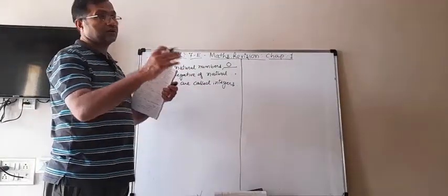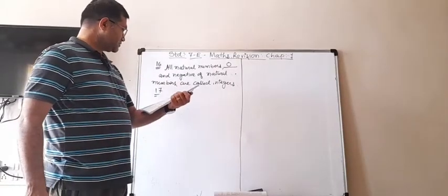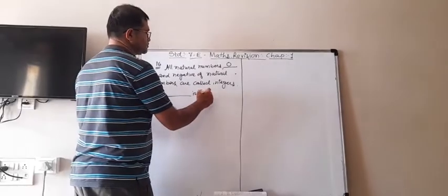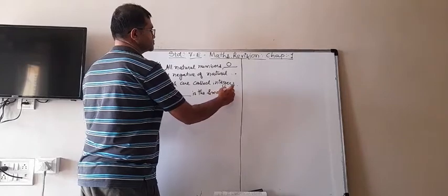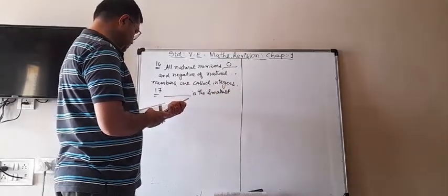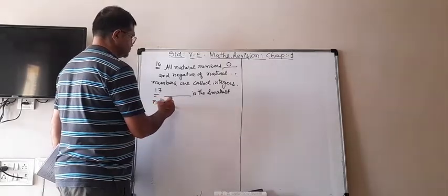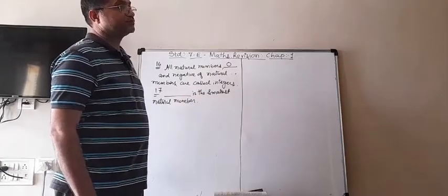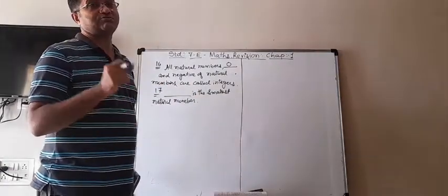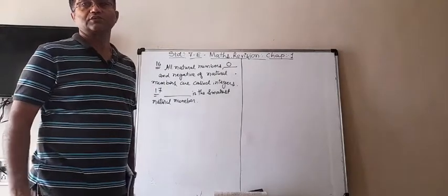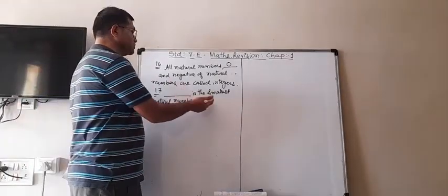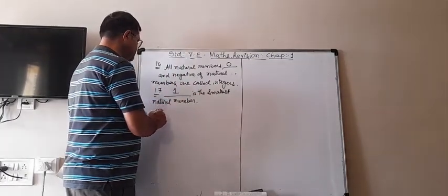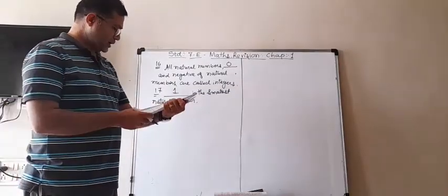The answer for the remaining number is zero. For blank 17: the smallest natural number. Be careful — the smallest natural number is 1, and the smallest whole number is zero. Sometimes by mistake you can write zero, but for smallest natural number the answer will be 1.